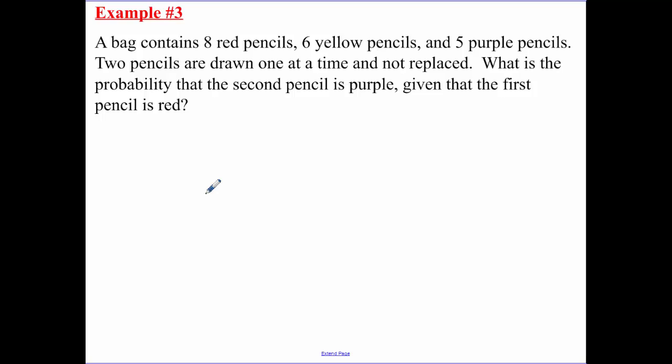A bag contains eight red pencils, six yellow, and five purple pencils. Two pencils are drawn at one time and not replaced. That's key - not replaced. What is the probability that the second pencil is purple, given the first pencil is red? Remember, given the first is red, so the first event is A. We're trying to find the second is purple, given the first is red.